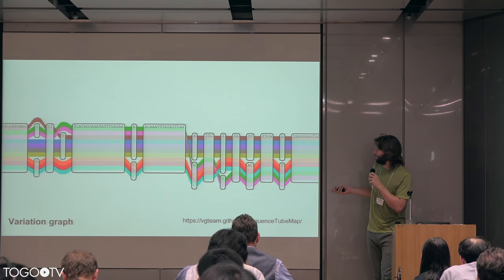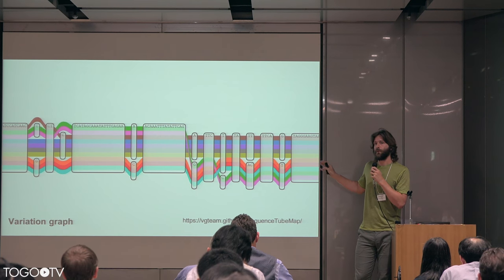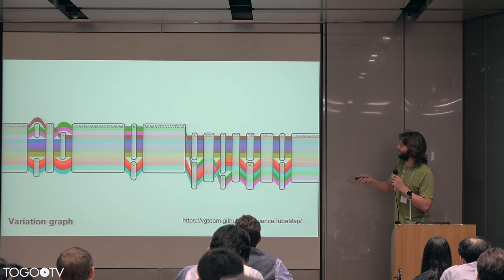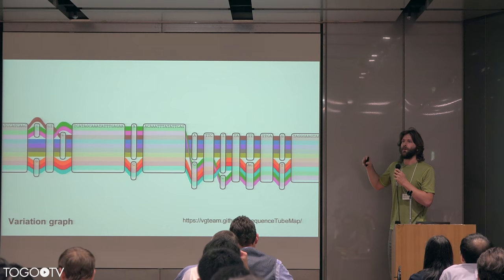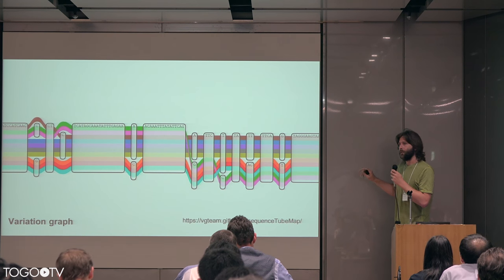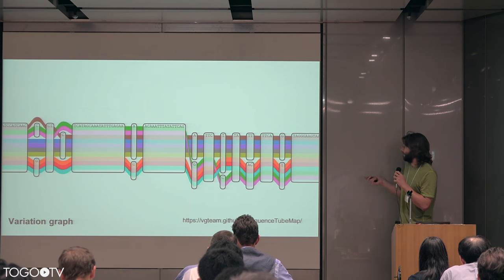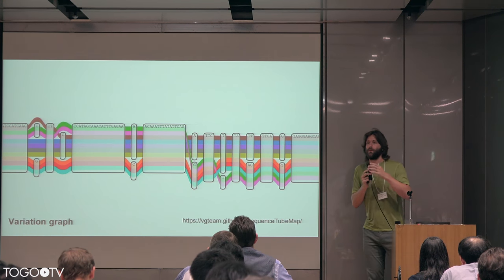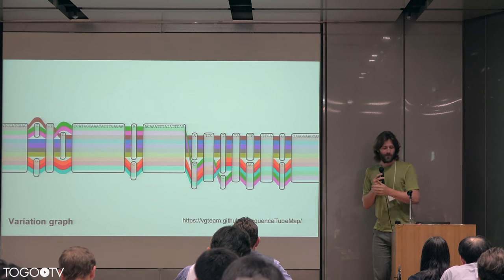Another visualization of this — both programmatically generated from VG tools, by the way. VG is the toolkit I'm talking about today. Another visualization is that you would think about the sequences actually threading through the nodes, and you could extend this to have very large numbers of sequences and really get an understanding of the relationship between them quickly. In fact, I think this might be much easier to interpret than many traditional linear layouts of the genome that relate different samples together.